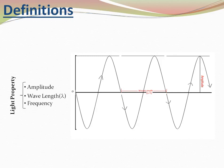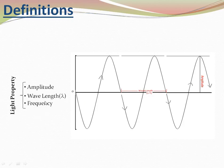Then comes frequency. Frequency is the number of waves in one second. Suppose there are five waves in one second, so the frequency of this light is five. In other words, frequency is one upon wavelength. So wavelength and frequency are inversely proportional: if frequency is more, wavelength will be less, and if wavelength is more, frequency will be less.